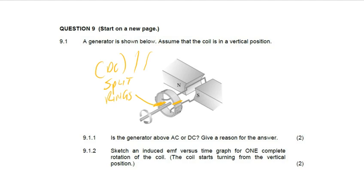If a generator has split rings, it tells you that it's DC. This is a commutator — we can say it has a commutator. DC has split rings; if you see split rings, you know it's DC.